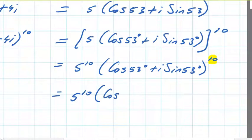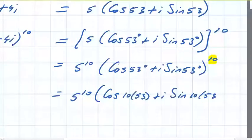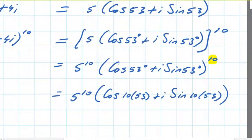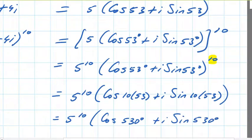It becomes the cos of 10 times 53 plus i sine 10 times 53. That's 5 to the power of 10, the cos of 530 degrees plus i sine of 530 degrees. And at this stage, the question is finished, really, because we've got rid of the problem that we had.